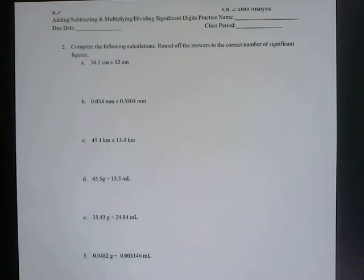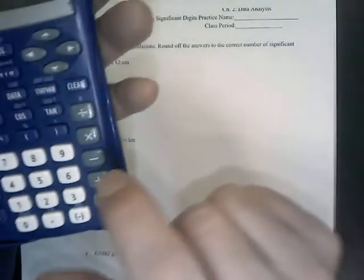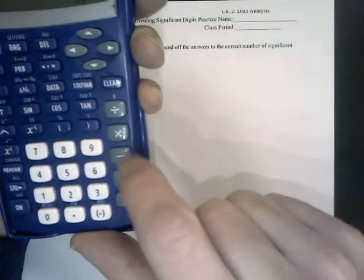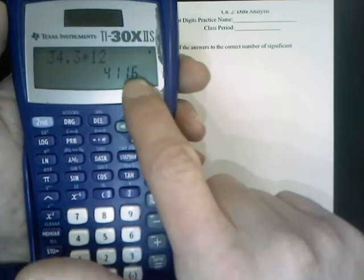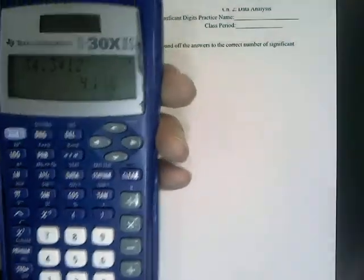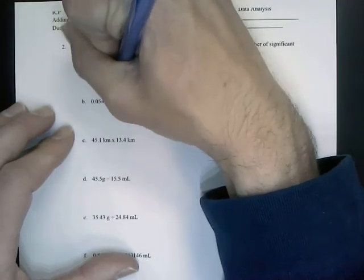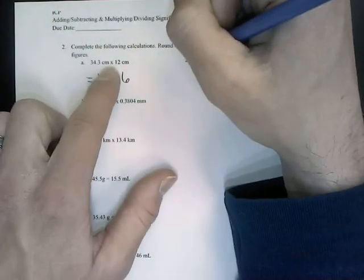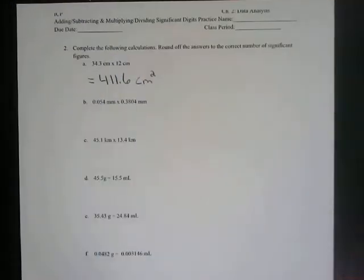In problem 2A, I'm going to take 34.3 times 12. So 34.3 times 12, I press enter. I'm going to write this exact number on my sheet. I'm going to get 411.6 in my calculator, and we multiplied centimeters times centimeters, so we get squared centimeters. And I want to note that this value right here is what we got in the calculator.